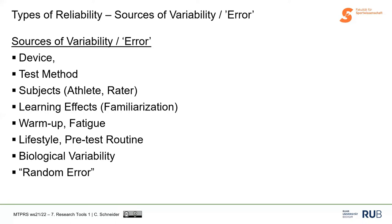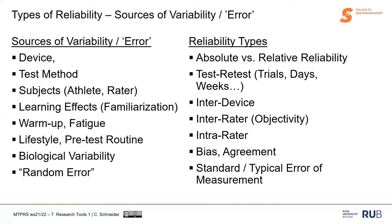We also hear the term random error — variability we cannot explain, that just happens without any clear cause. There are different types of reliability: absolute and relative reliability, test-retest reliability separating trial-to-trial from day-to-day or week-to-week variation, inter-device reliability (also called objectivity), intra-rater reliability, and measures of bias and agreement. A key focus today is the standard error of measurement, or typical error of measurement.